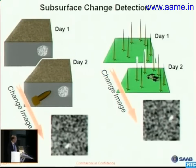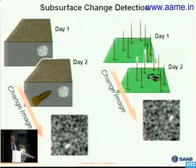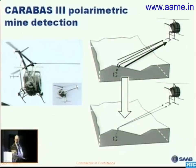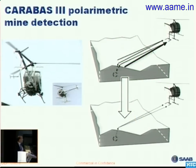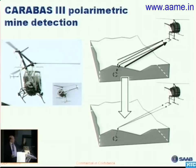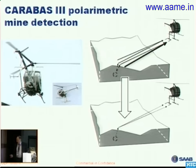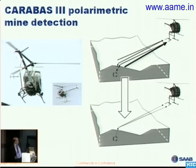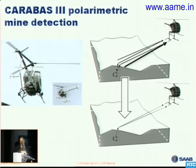We are also considering subsurface targets, using change detection there as well. The technique allows you to see through the ground while stones and similar features can be subtracted away. We are investigating and using polarimetry for this application. The polarimetric signal gives a much stronger return from the surface than the subsurface. The vertical channels give the surface clutter return, and that can be used to subtract the surface return and leave only the subsurface features.